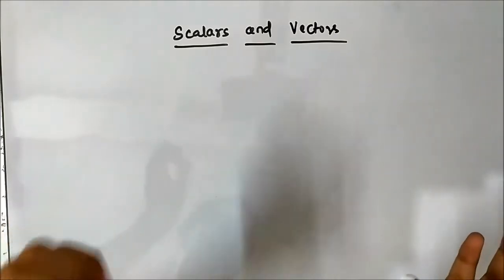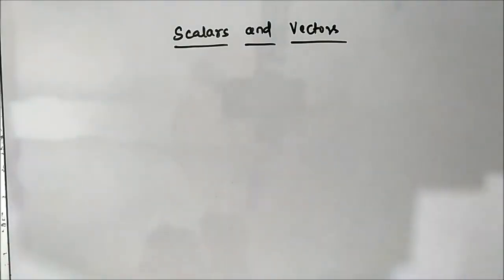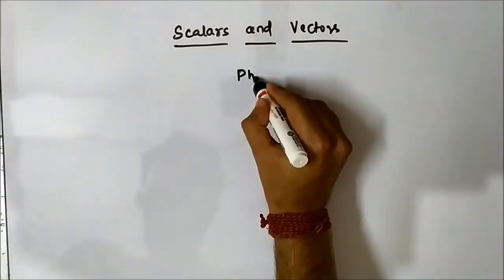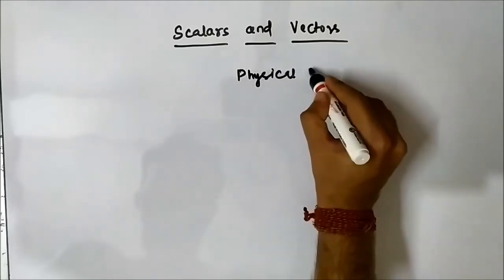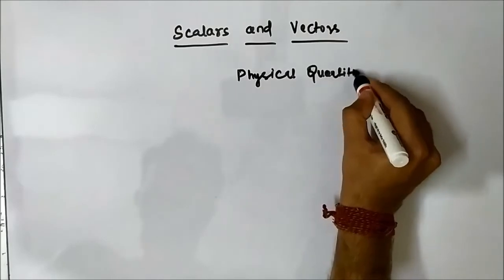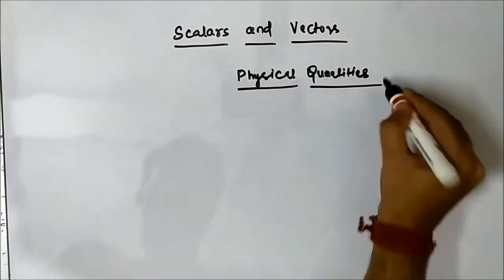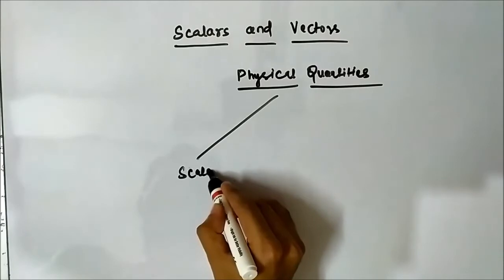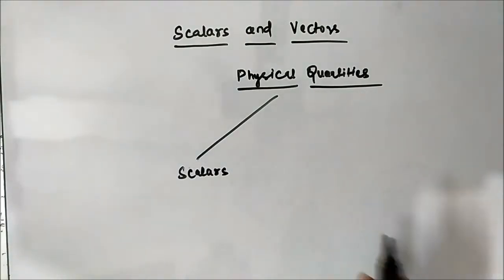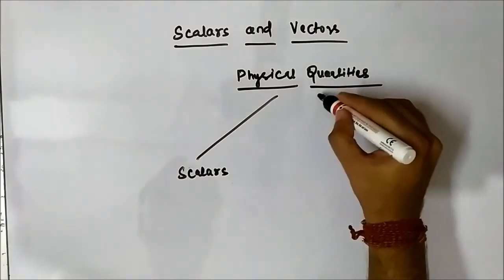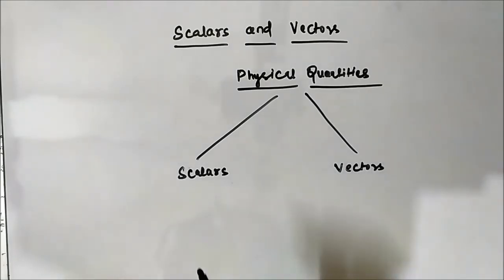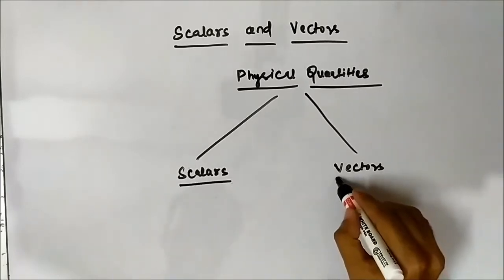All physical quantities, mainly from the point of view of physics and engineering, are divided into two categories. The first category is called scalars and the second category is called vectors.